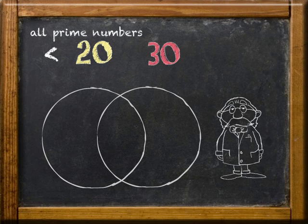The prime numbers less than 20 include 2, 3, 5, 7, 11, 13, 17, and 19.